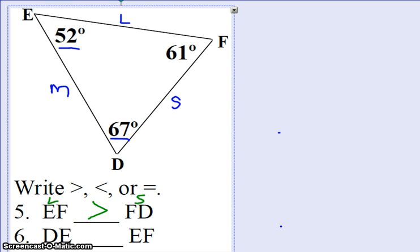And DE for problem number six. DE is marked as a medium or a middle. And EF is marked as my largest. Alligator wants the teeth opening, eating what is the biggest. So it looks like we'll have a less than sign in there. So we'll have DE is less than EF.